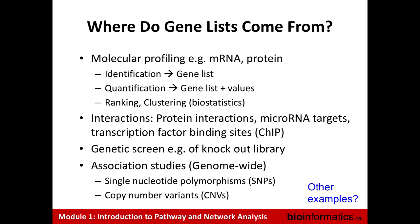A quick point about where gene lists come from — it's important to know because you'll be able to answer different questions based on the data source. You can have gene lists from molecular profiling like mRNA or protein. You might identify all proteins in your sample with proteomics, or quantify them and look at differential expression, ranking genes by how differentially expressed they are. If you have lots of samples, you can cluster to find natural groupings. These are all biostatistical analysis methods. If you work with protein interaction data, microRNA targets, or transcription factor binding sites, you immediately get a list of things that interact with your molecule of interest.